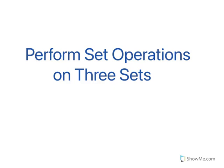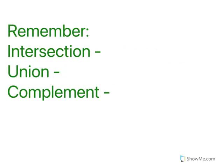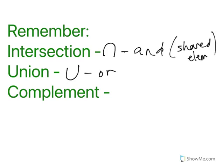Perform operations, set operations, on three sets. So let's remember that intersection is a little n without the bar across, right? This means 'and.' Union looks like a u and means 'or.' And means these are the shared elements. Or means one or the other.